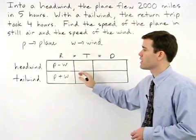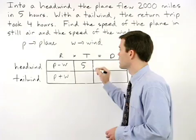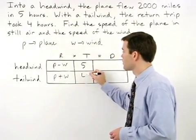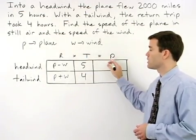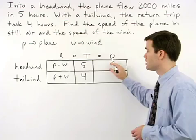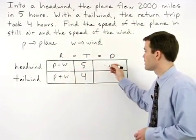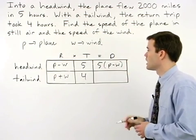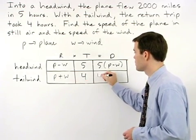The time for the headwind trip is five hours and the time for the tailwind trip is four hours. So based on our formula rate times time equals distance, the distance for our headwind trip is five times p minus w, and the distance for our tailwind trip is four times p plus w.